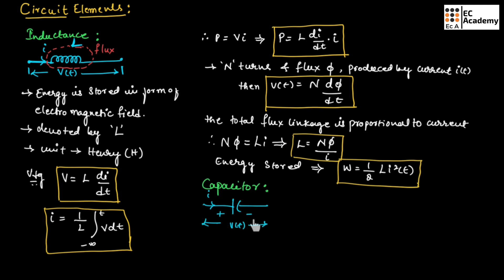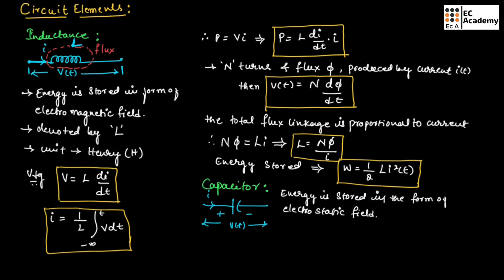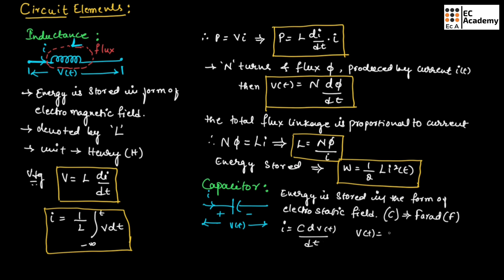Now let us understand capacitor. In a capacitor, energy is stored in the form of an electrostatic field. The capacitor is denoted by capital C and is measured in terms of farad (F). The current is represented as I equals C dV(t) by dt. From this, V(t) equals 1 by C times the integral from minus infinity to t of i dt, and C can be written as Q by V.